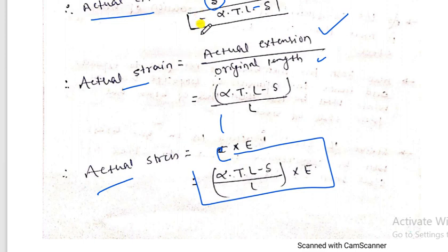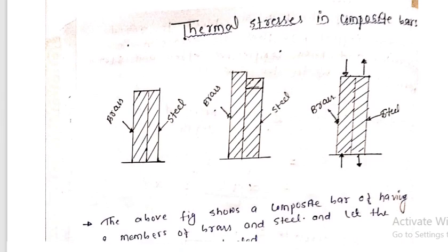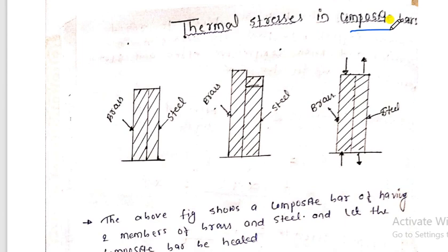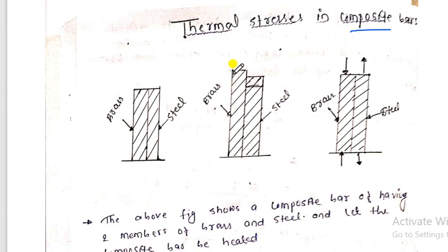Now let's discuss thermal stress in a composite bar. We have already covered what a composite bar is — it is a combination of two or more bars. Here, one end is fixed and the bar consists of brass and steel. When heat is applied to both materials, the brass expands more than steel because brass has a higher coefficient of expansion. Both materials expand, but by differing amounts.